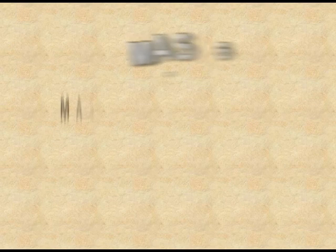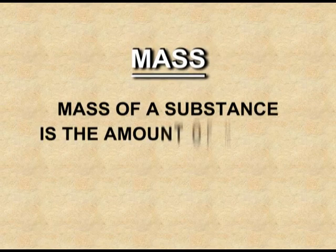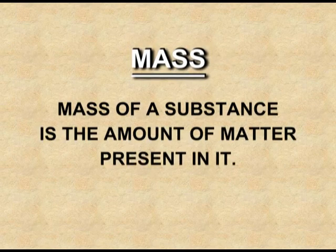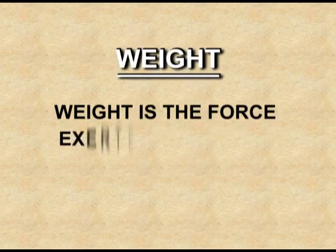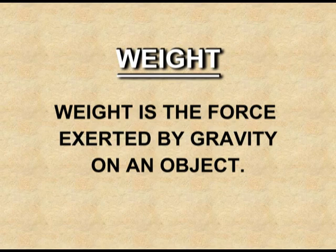Mass and weight are altogether different. Mass is the amount of matter contained in a body or substance, while weight is the force exerted by gravity on an object. Mass for a substance is constant and can be measured using an analytical balance. Gravity varies from place to place, and to measure it we use a spring balance.